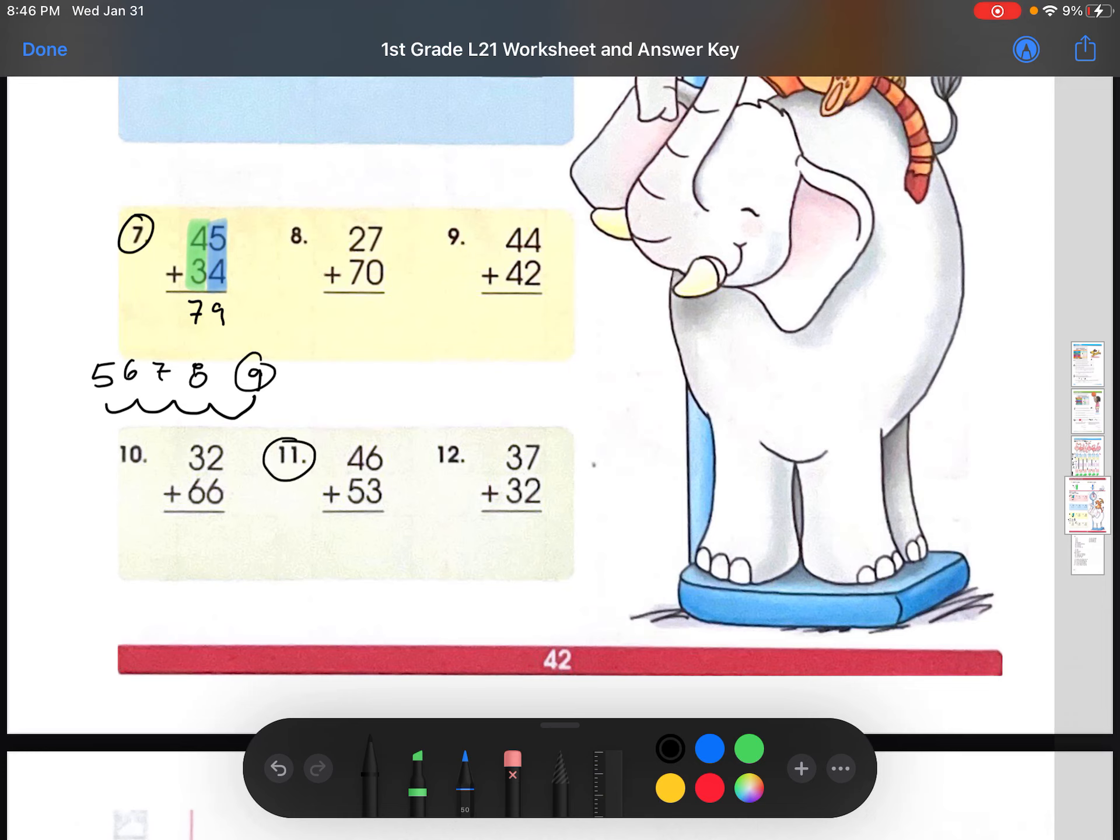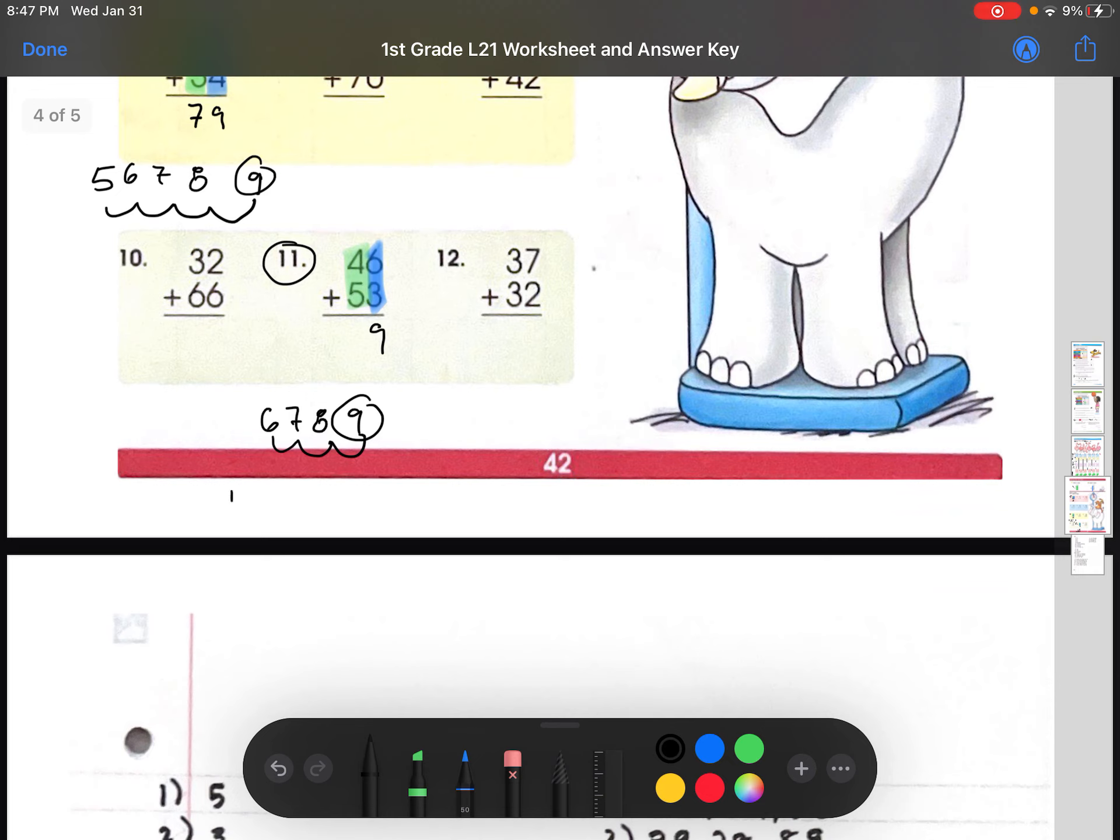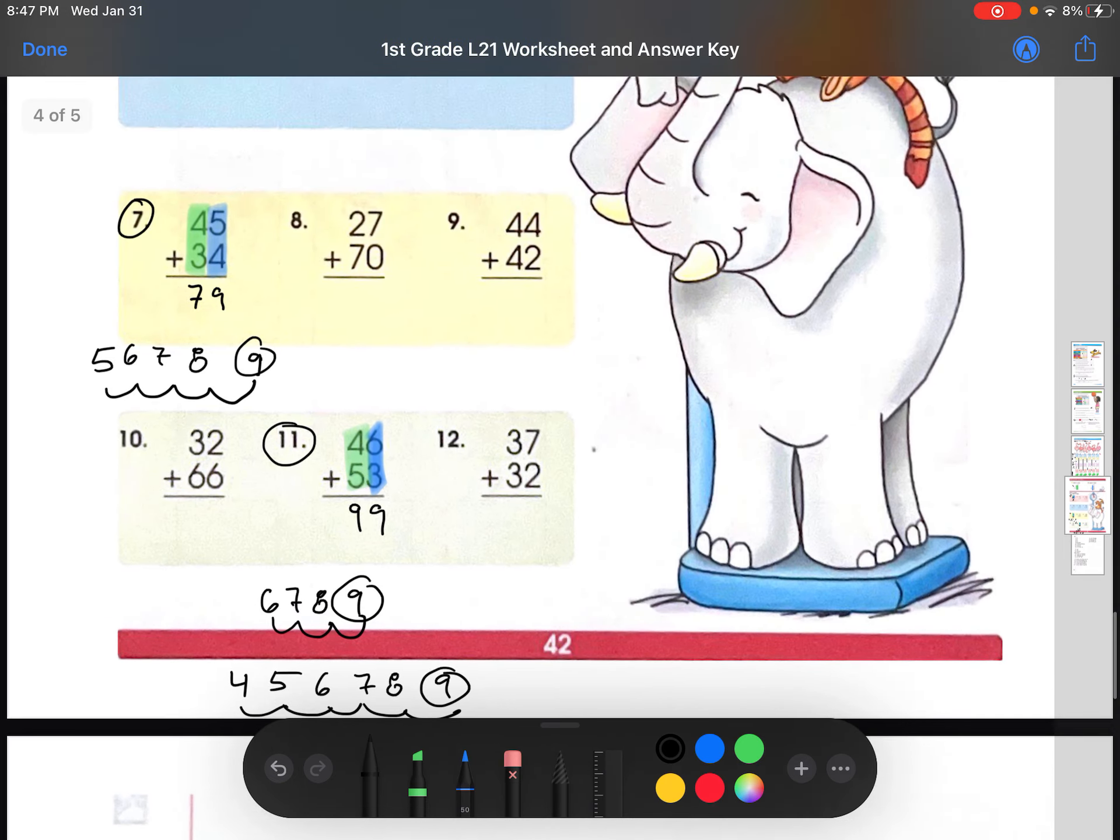All right. Let's just do one last one. Let's do number 11 together. 46 plus 53. Again, first you start off in the ones place. 6 plus 3. You can do the number line method. 6. 1, 2, 3. 9 would be the answer for the ones place. And then, you can focus on the tens place. 4 plus 5. You can do the number line method, or count. Up to you. Let's just do the number line method right here. 4. 1, 2, 3, 4, 5. Count. 6, 7, 8, 9. So, the tens place is 9. Which means the actual answer for number 11 is 99.